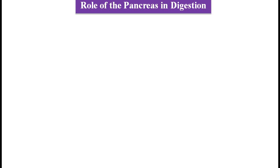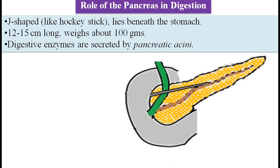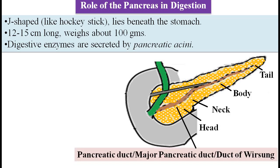Role of pancreas in digestion: the pancreas is a G-shaped organ that lies beneath the stomach. It is 12 to 15 cm long and weighs about 100 grams. The pancreas has groups of cells called pancreatic acini, which secrete digestive enzymes. The pancreas is divided into four parts: head, neck, body, and tail. The pancreatic acini secrete enzymes that are collected by the pancreatic duct, also called the major pancreatic duct or the duct of Wirsung.